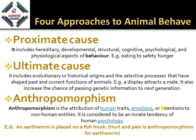Anthropomorphism is a vast field of biology involving the attribution of human traits, emotions, and intentions to non-human entities. It is considered an innate tendency of human psychology. For example, when an earthworm is placed on a fish hook, human beings may assume the earthworm experiences fear and pain — here we are relating other animals to human behavior.